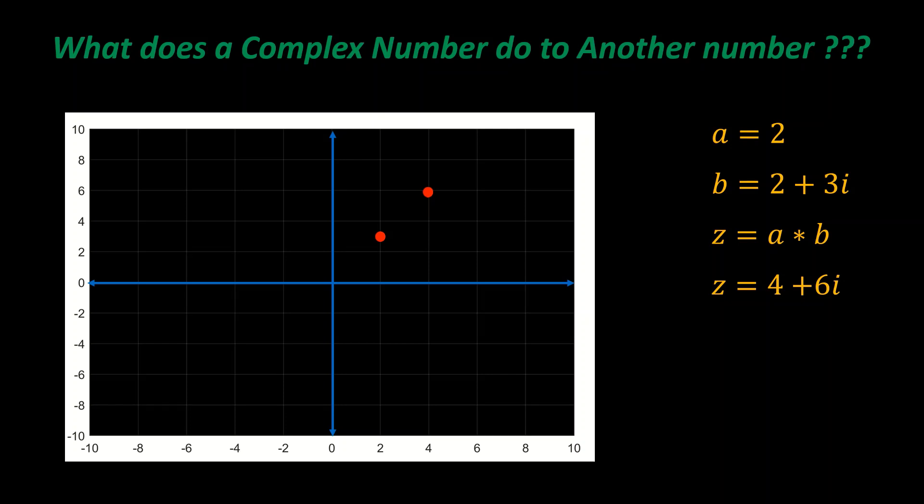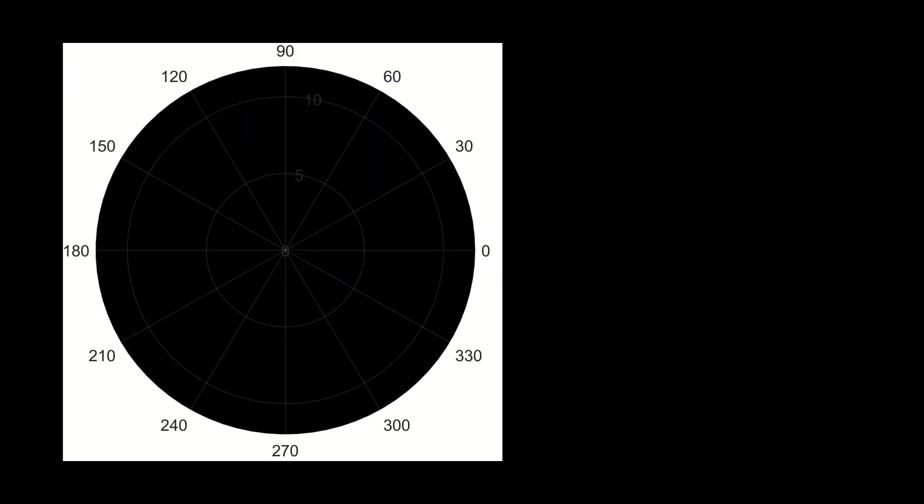But if we see in a polar plot, we can get a better understanding. Let me first write a real number 2, which is represented by a vector like this.